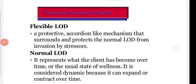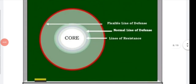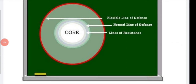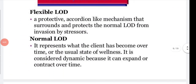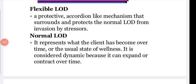The Flexible Line of Defense is a protective, accordion-like mechanism that surrounds and protects the Normal Line of Defense from invasion by stressors. It is the outermost layer. The Normal Line of Defense represents what the client has become over time — the usual state of wellness. It is considered dynamic because it can expand or contract over time depending on whether defense is needed.